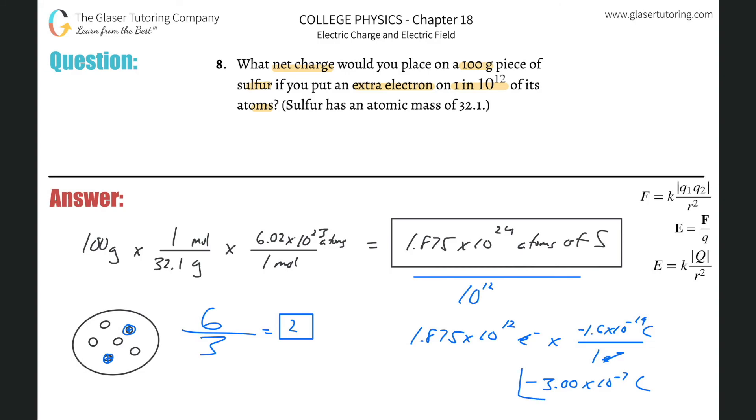Now, if you wanted that in microcoulombs, by all means multiply that by 10 to the sixth and you can get that. If you want nanocoulombs, you could do that too. Alright guys.